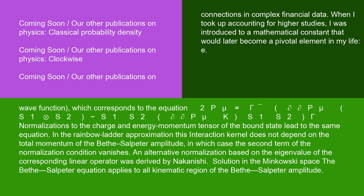which corresponds to the equation 2P^μ equals ⟨γ|(∂/∂P^μ)[S₁⊗S₂] - S₁S₂(∂/∂P^μ)K|S₁S₂|γ⟩. Normalizations to the charge and energy-momentum tensor of the bound state lead to the same equation.